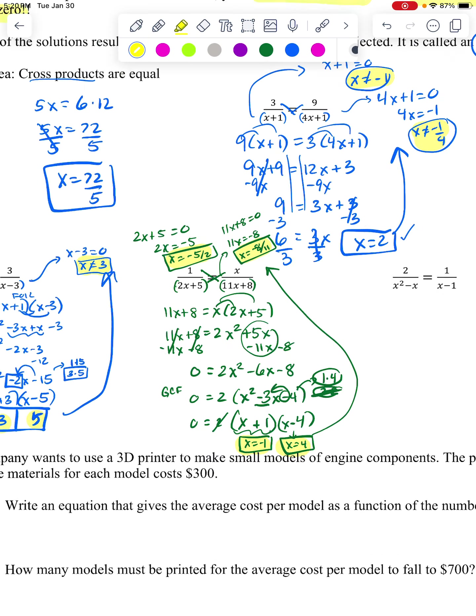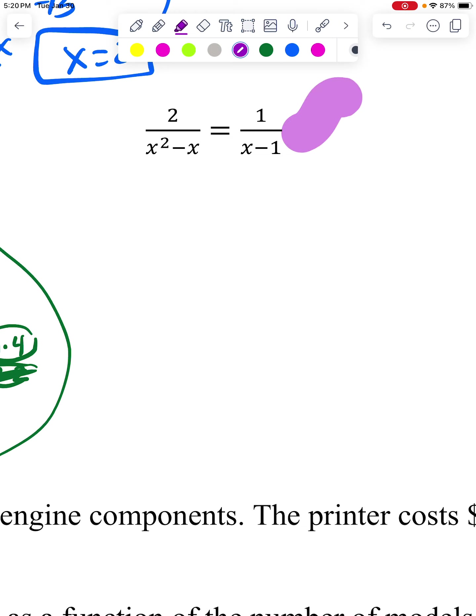All right. Onward. Let's take a look at the bottoms again. Whoa. So the bottom of this one, x minus 1 will equal zero when x is 1. So that is going to be a number that if I get, I can't use.